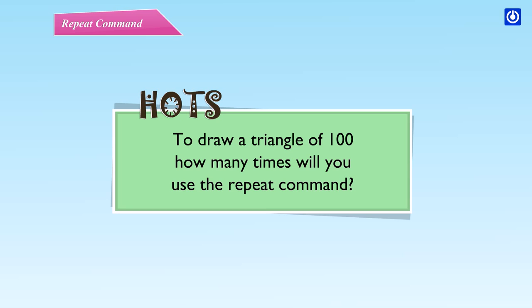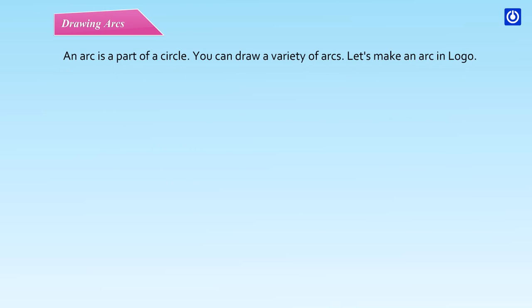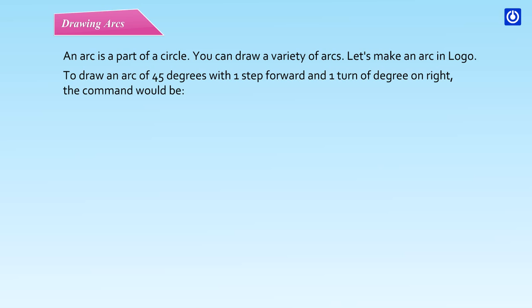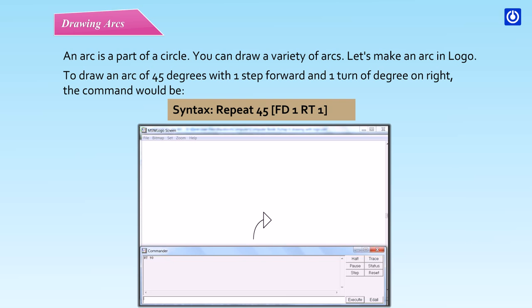Drawing arcs: An arc is a part of a circle. You can draw a variety of arcs. To draw an arc of 45 degrees with one step forward and one turn of one degree on the right, the command would be — Syntax: Repeat 45 [FD1 RT1].